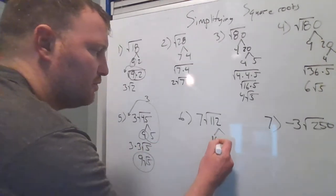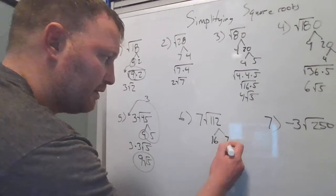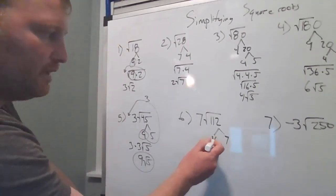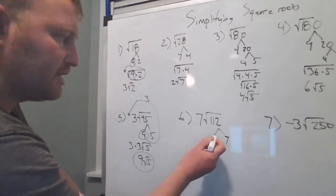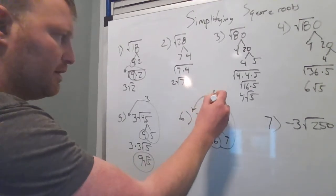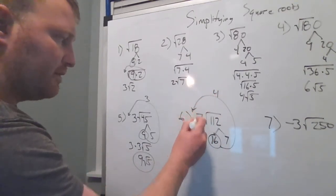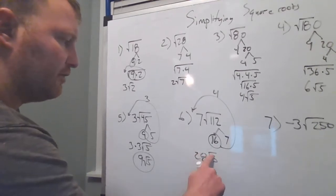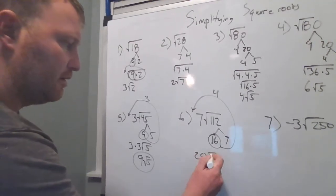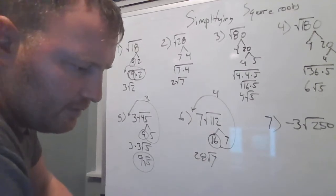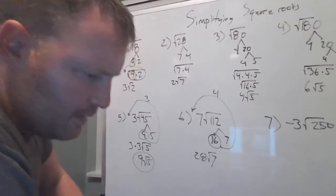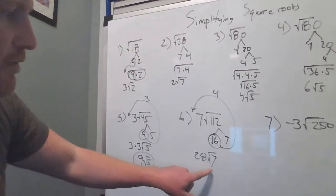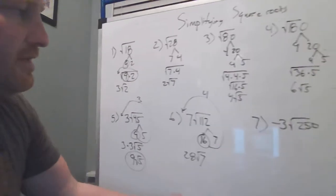112 divided by 16 is 7. Always work smarter, not harder. Square root of 16 comes outside as a 4, right? Then multiply this 4 times this 7, and that's 28 radical 7.